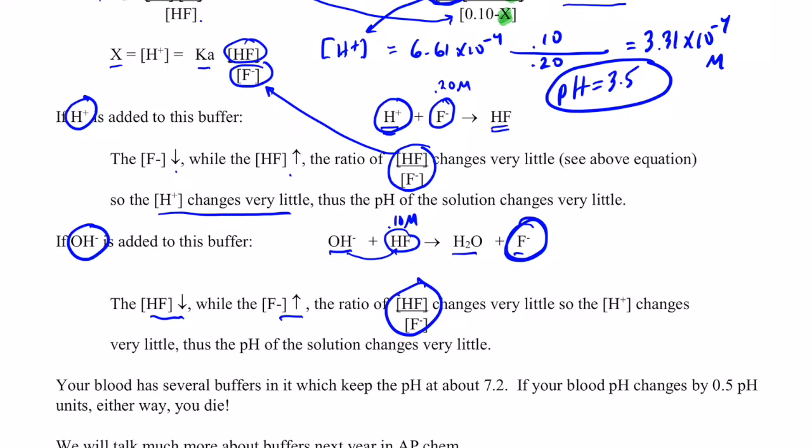So the HF concentration will go down. The F negative will go up a little bit, because we do make some F negatives. But this ratio here that we saw earlier, once again, will change very little. So the H plus will change very little, so the pH will not change very much. When I add a strong base, it might go up just a little bit, but very, very little.